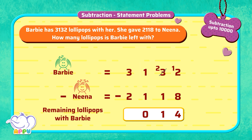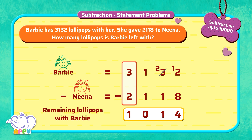Finally, in the thousands place, we have 3 minus 2 which is equal to 1. Barbie has 1,014 lollipops left with her.